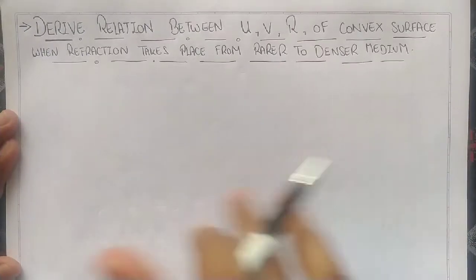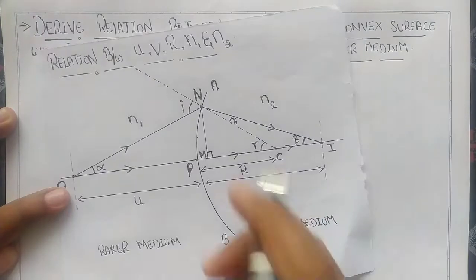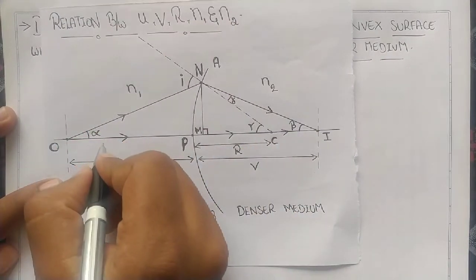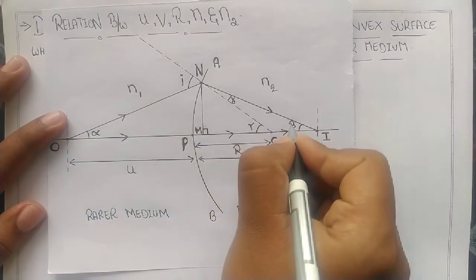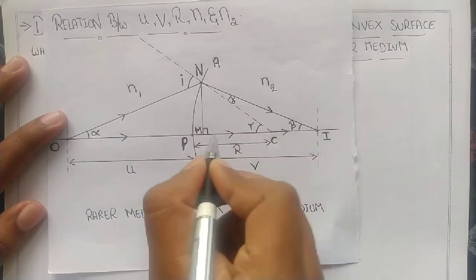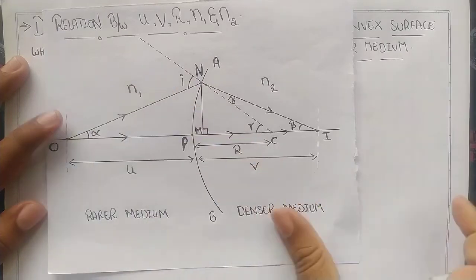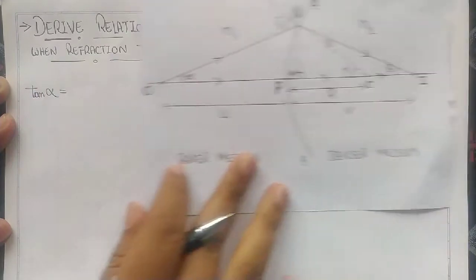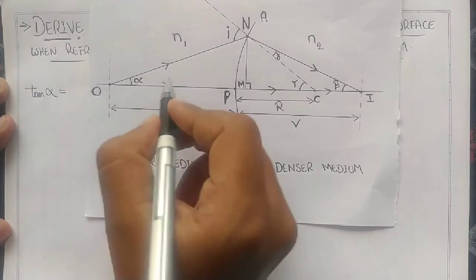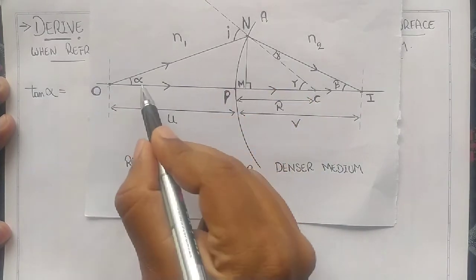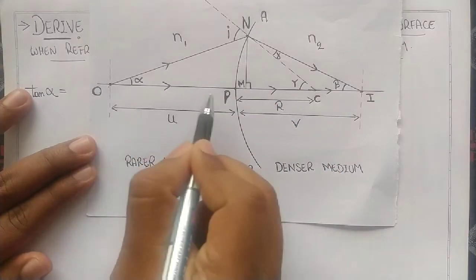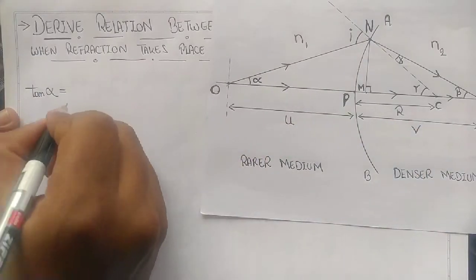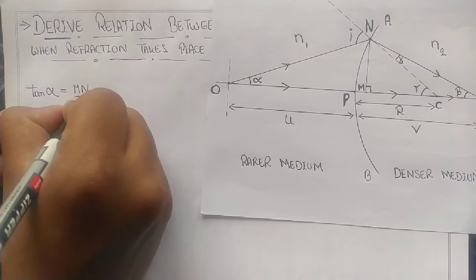Now let us move with mathematical solution. We can see there are three angles: alpha made by the incident ray, beta made by the refracted ray, and gamma made by the construction line. Take tan alpha - what is tan? Opposite by adjacent. With respect to O and M, tan alpha equals NM by OM.